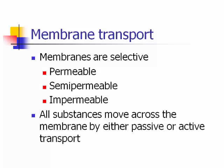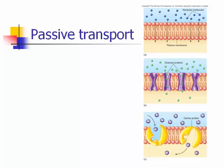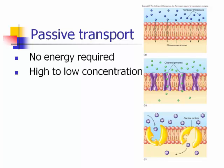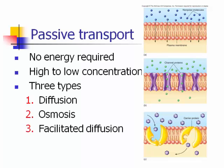All substances move across the membrane by either passive or active transport. Passive transport has no energy requirement — no ATP is needed — and everything moves from an area of high concentration to low concentration. There are three types: diffusion, osmosis, and facilitated diffusion. The first type shows small nonpolar molecules that can just slip through the membrane via diffusion.